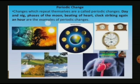Periodic changes: changes which repeat themselves are called periodic changes. Day and night, phases of the moon, beating of a heart, and a clock striking every hour are examples of periodic changes. Such changes occur again and again after a definite interval of time.